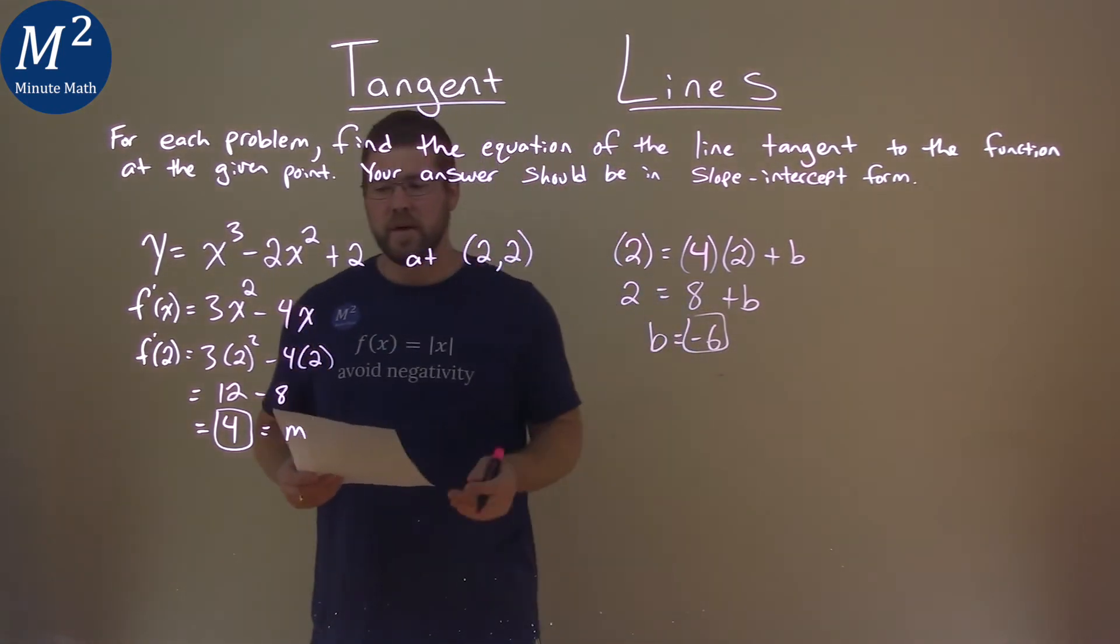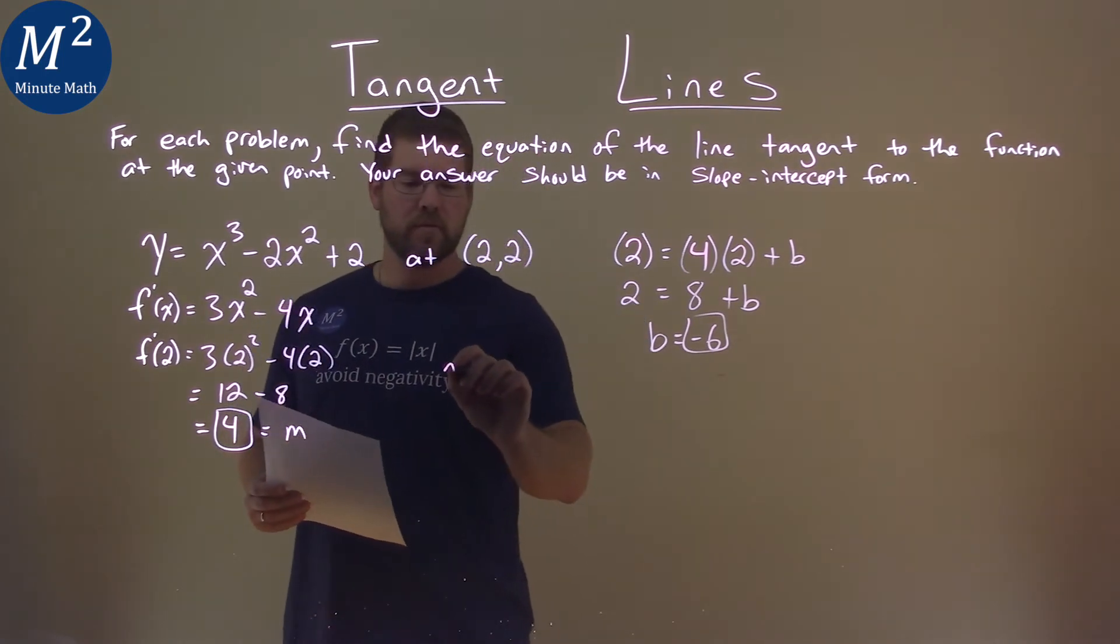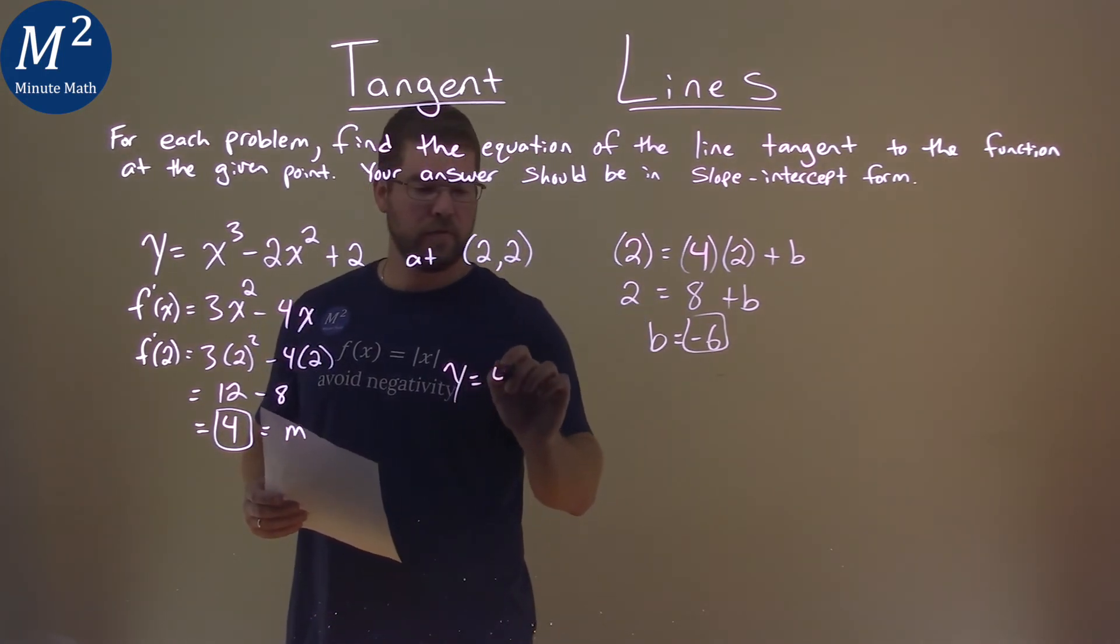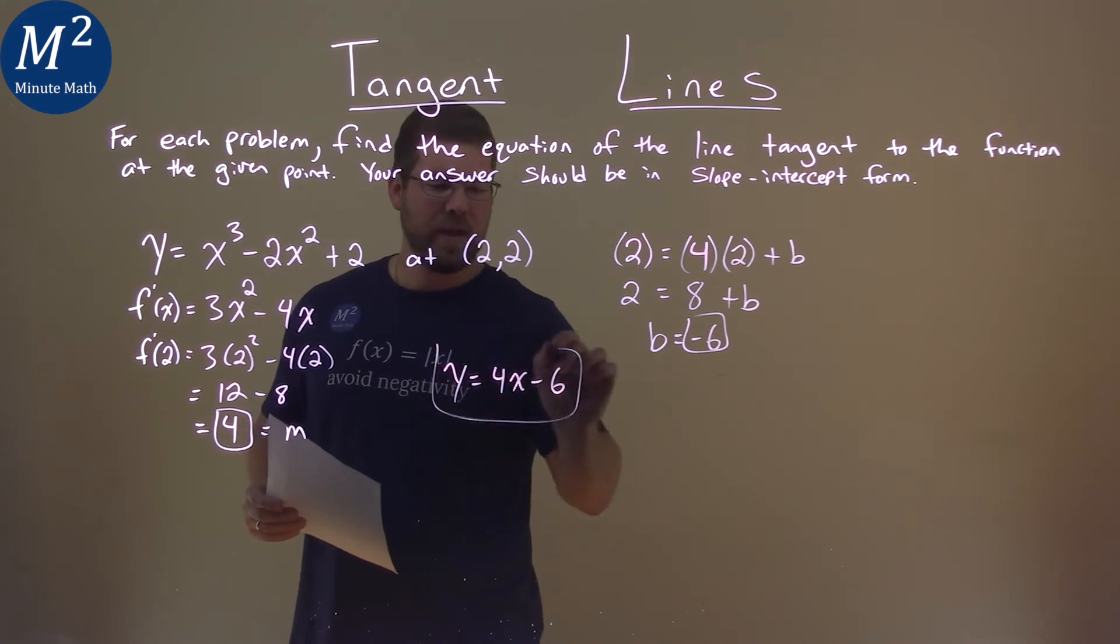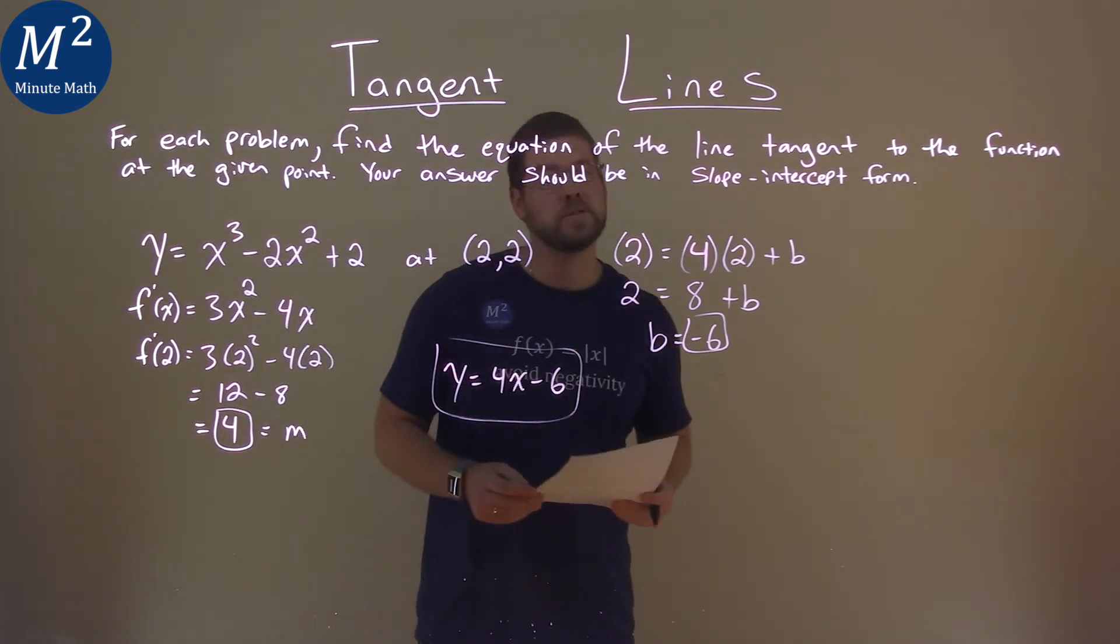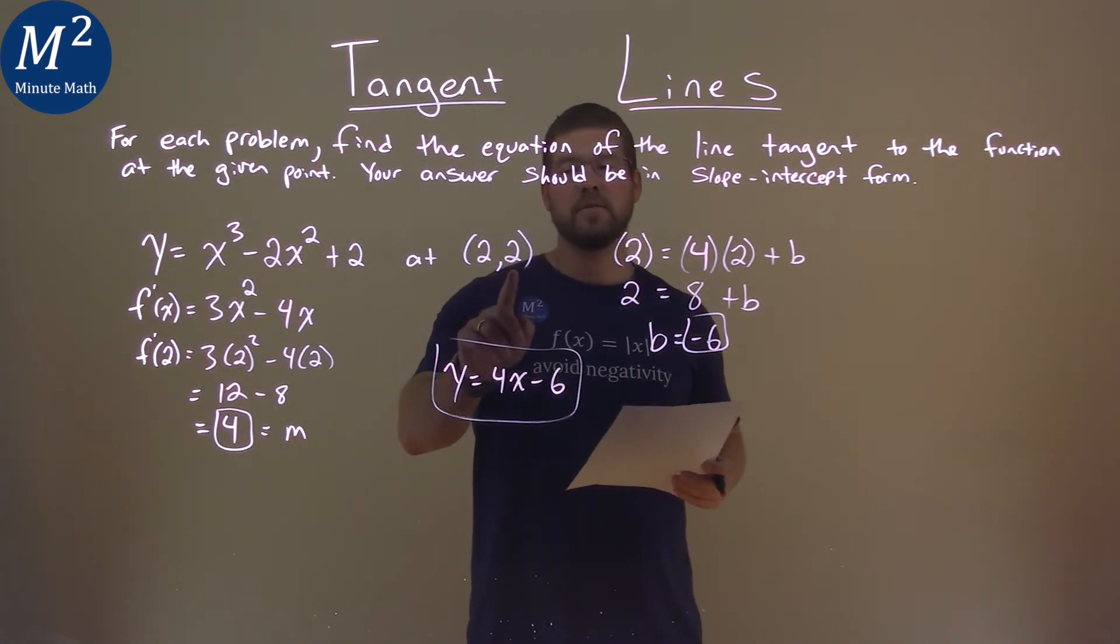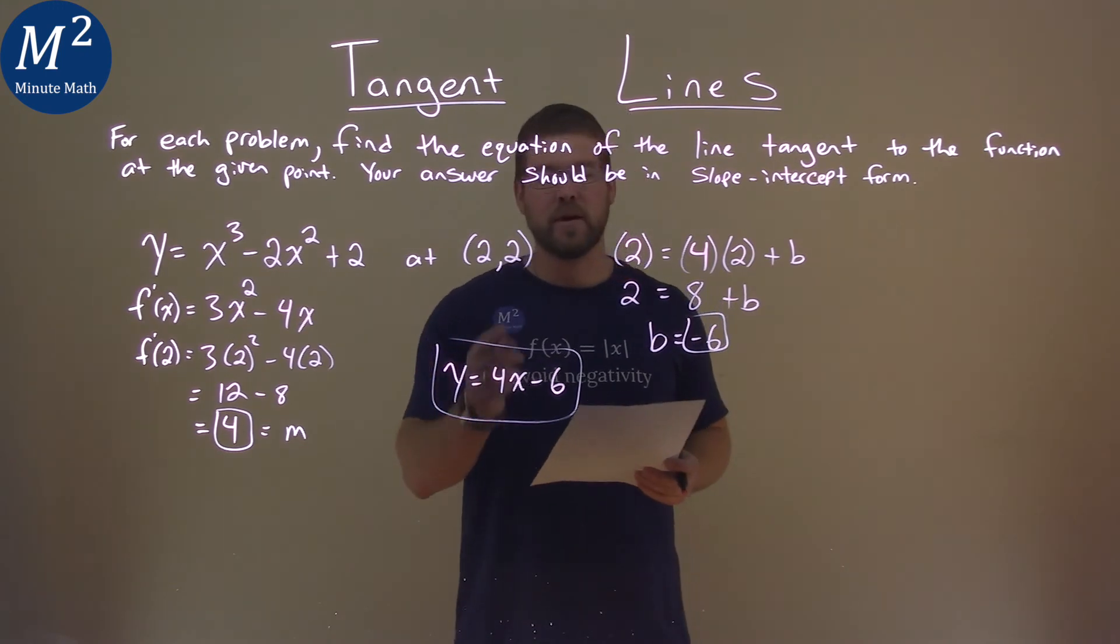So we have negative 6 for b. Our slope is 4, so we can write this together to be y equals 4x minus 6. And right there is the equation of the line tangent to the function at 2 comma 2. And again, it's y equals 4x minus 6.